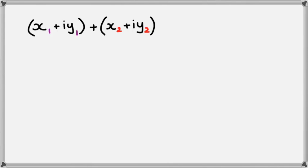So when we're adding two complex numbers, what we need to do is collect all the real parts first. So in this case it's x1 and x2, and we add it up. And that will be our real part of the new complex number.